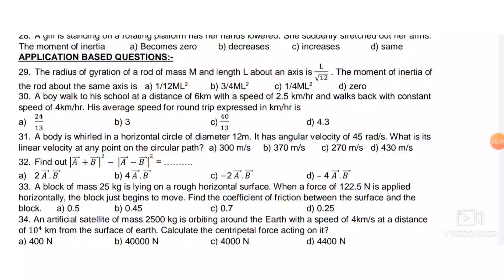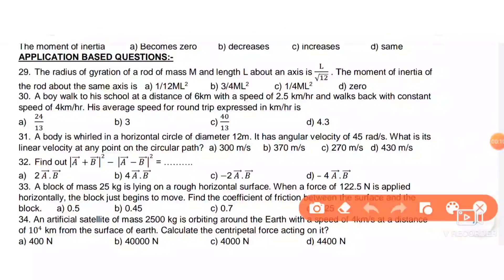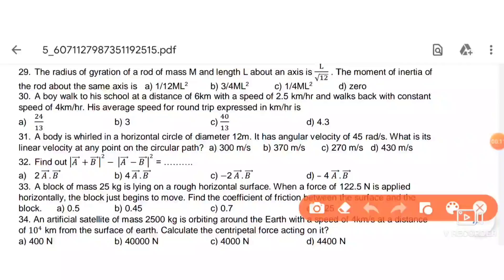Application-based question: the radius of gyration of a rod of mass m and length l about its axis is l/√12. The moment of inertia about the same axis gives answer A.